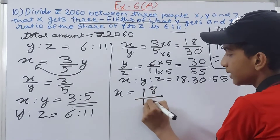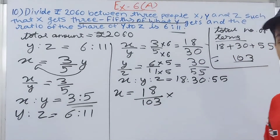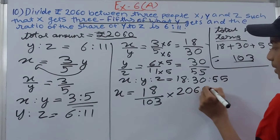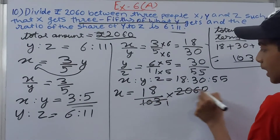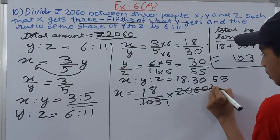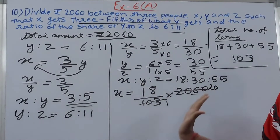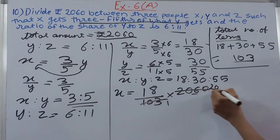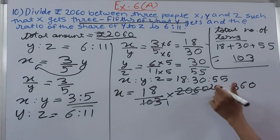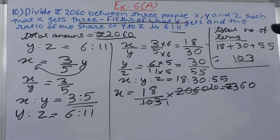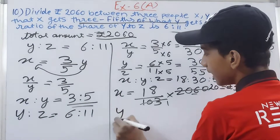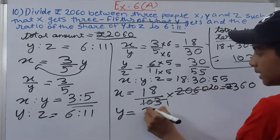103 is the sum of the terms. The share of X equals 18 upon 103 multiplied by 2060. Since 2060 divided by 103 equals 20, we get 18 multiplied by 20, which is 360. So X gets rupees 360.